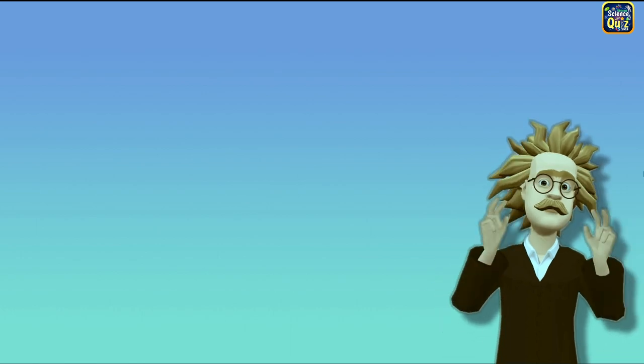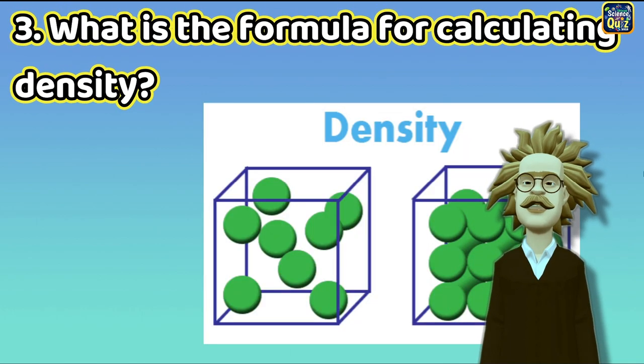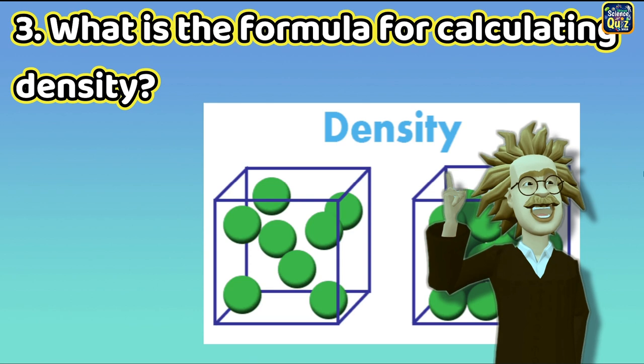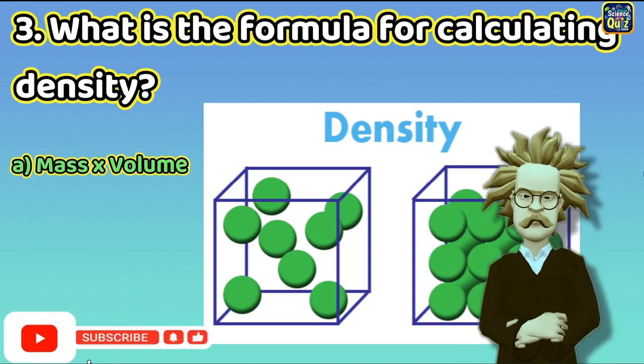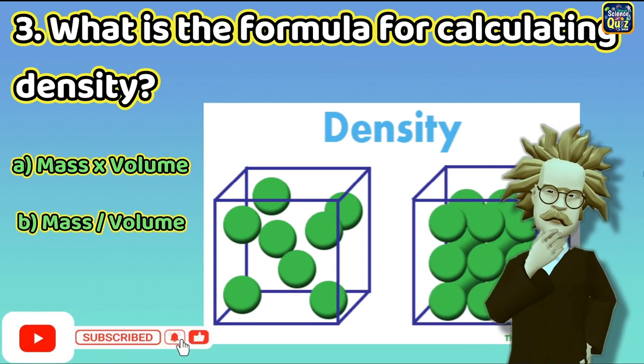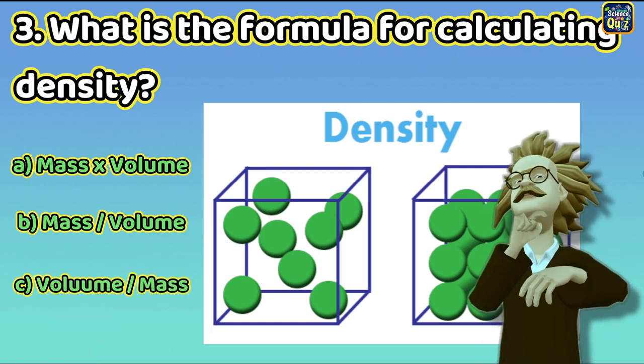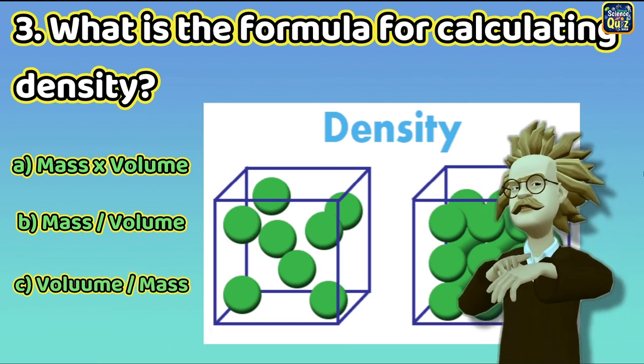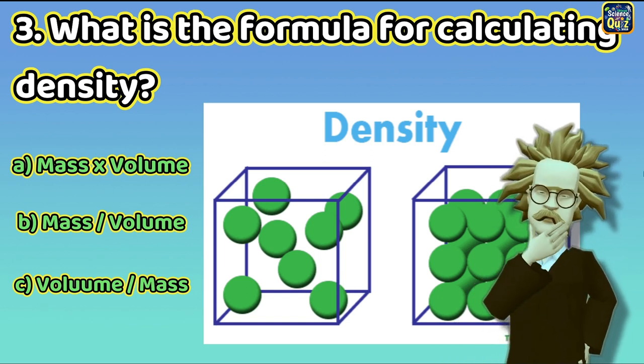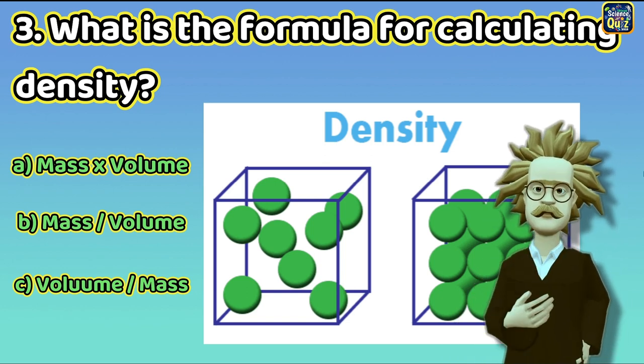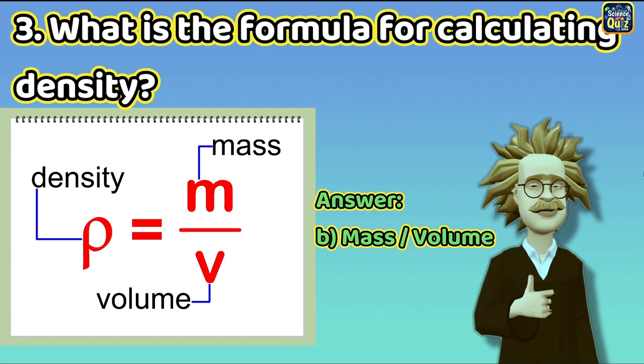Question 3: What is the formula for calculating density? A. Mass into volume, B. Mass divided by volume, C. Volume divided by mass. The right answer is B. Mass divided by volume.